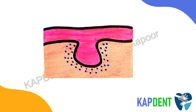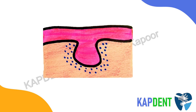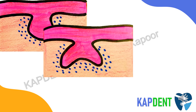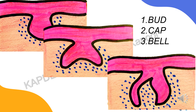In such areas, the ectodermal cells multiply more rapidly to form little knobs or plaques that grow into the underlying mesenchyme. Let us call these knobs the enamel organ. As cell proliferation continues at differential rates, the enamel organ increases in size, sinks deeper into the ectomesenchyme, and changes its shape from bud to cap, and finally assumes a shape resembling a bell.